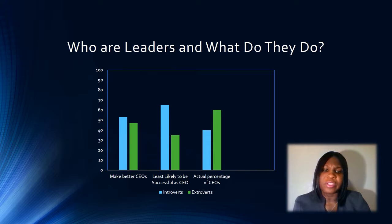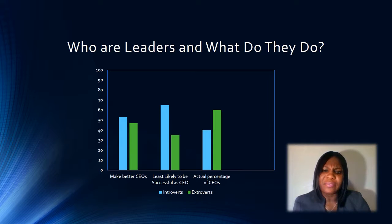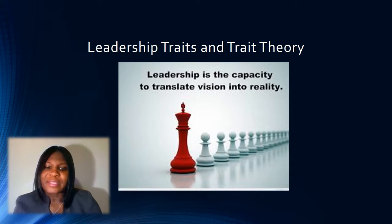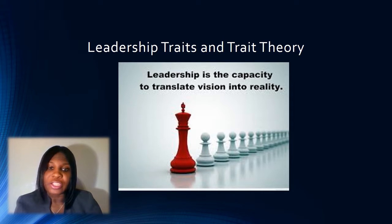Our textbook provided statistics from a survey of 1,542 senior managers to determine who they felt would be a more successful CEO. 47% said that extroverts make better CEOs. Despite the 53% who felt that introverts make better CEOs, 65% stated that being an introvert hurts the CEO's chances of being successful. Our textbook defines traits as relatively stable characteristics such as abilities, psychological motives, or consistent patterns of behavior.